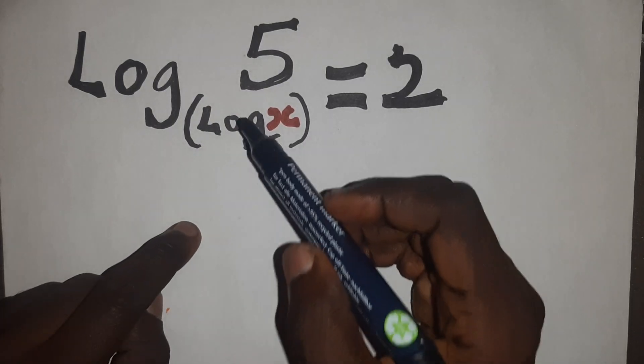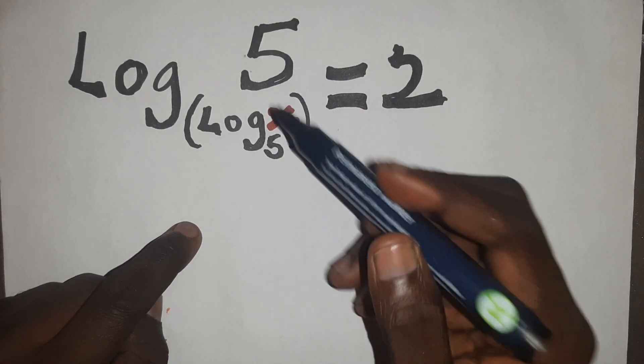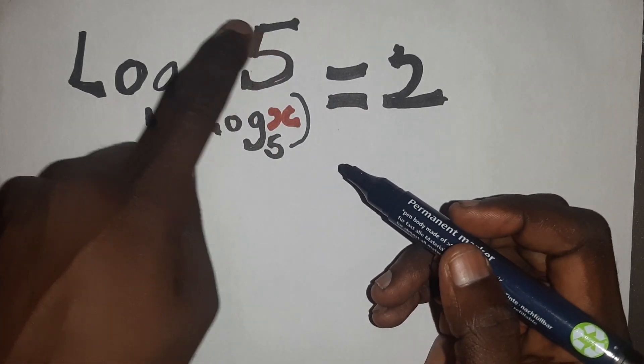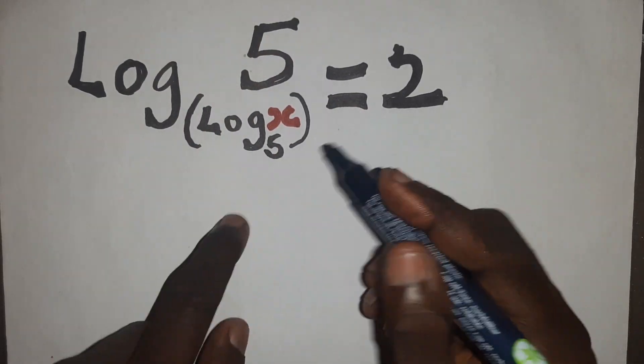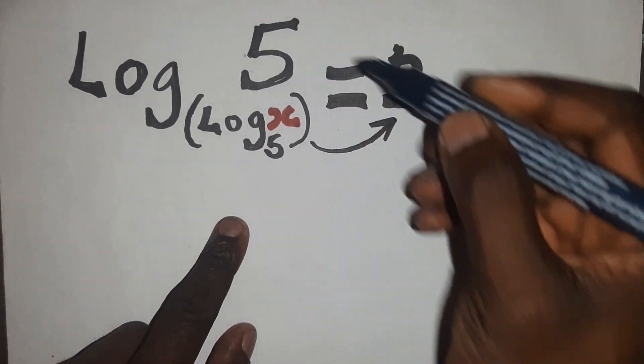Okay, so by definition, the base raised to the power of something must give 5. And since this whole expression on the left hand side is equated to 2, it means this base raised to the power of 2 must give 5.